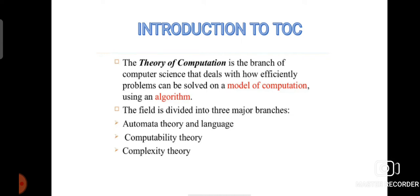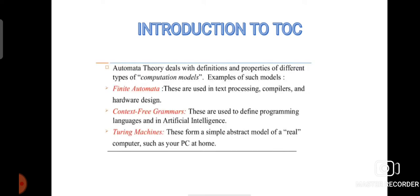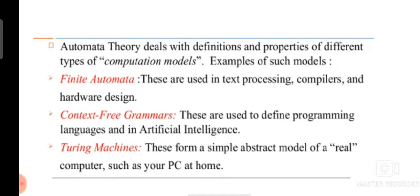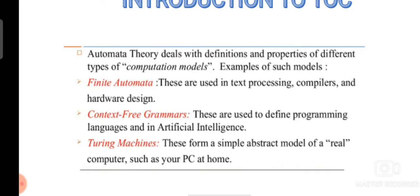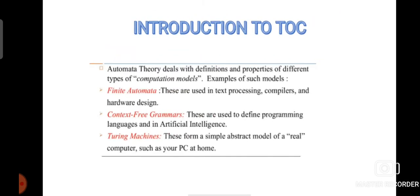The TOC field is divided into three major branches: automata theory and language, computability theory, and complexity theory. Automata theory deals with the definitions and properties of different types of computational models, such as finite automata, context-free grammars, and Turing machines. Finite automata is used in text processing, compilers, and hardware design. Context-free grammars are used to define programming languages and in artificial intelligence. Turing machines are a simple abstract model of a real computer such as our PC.